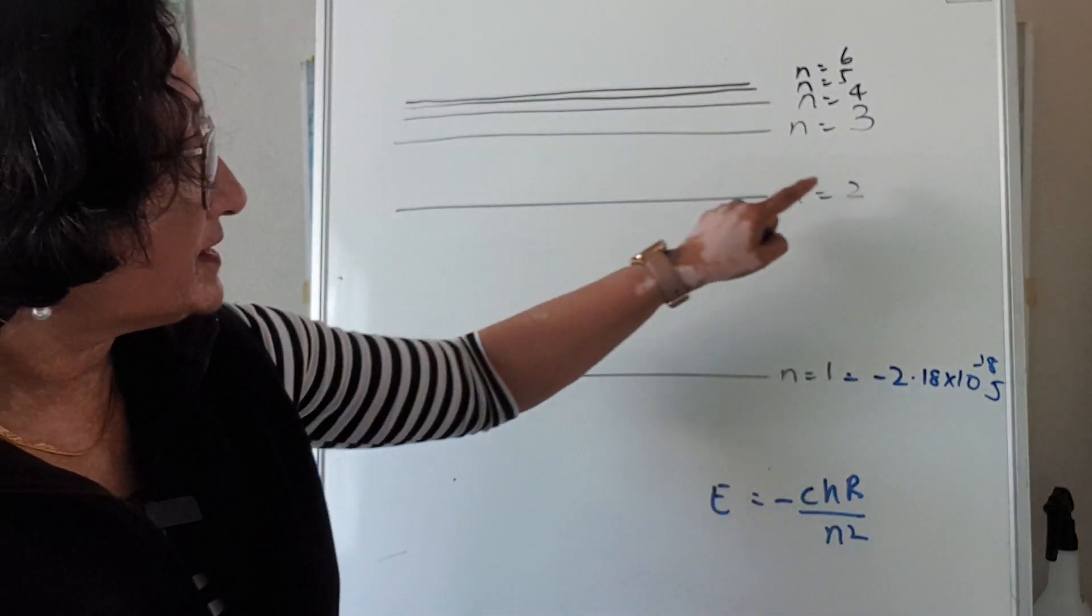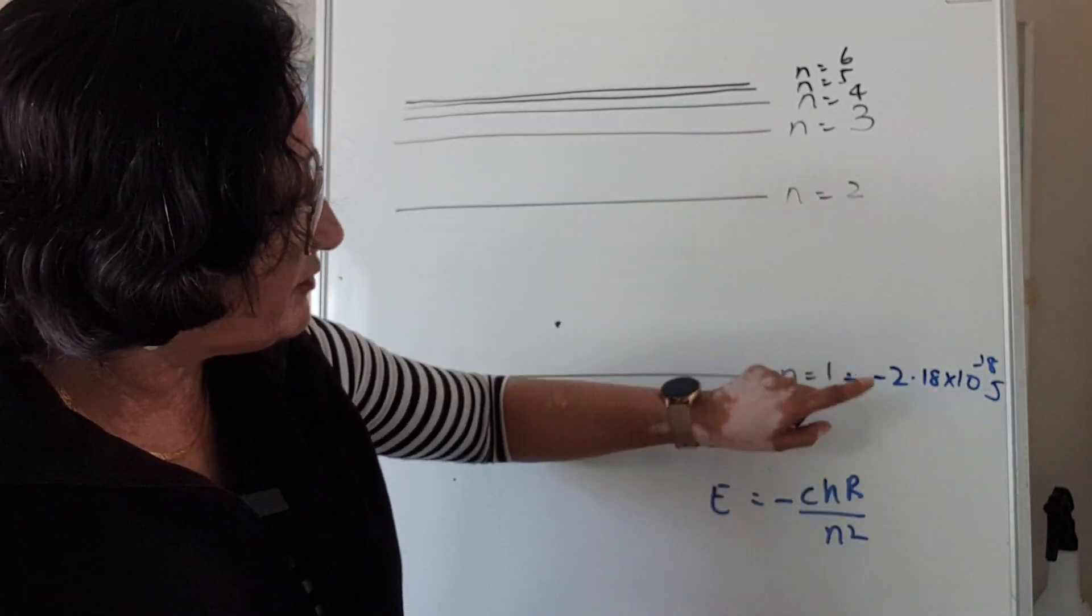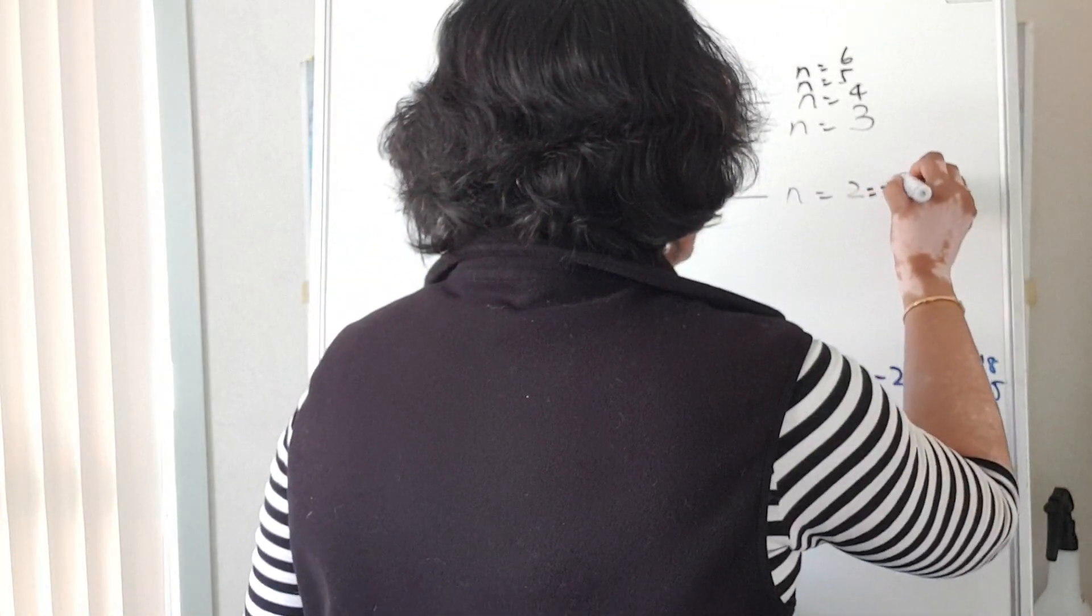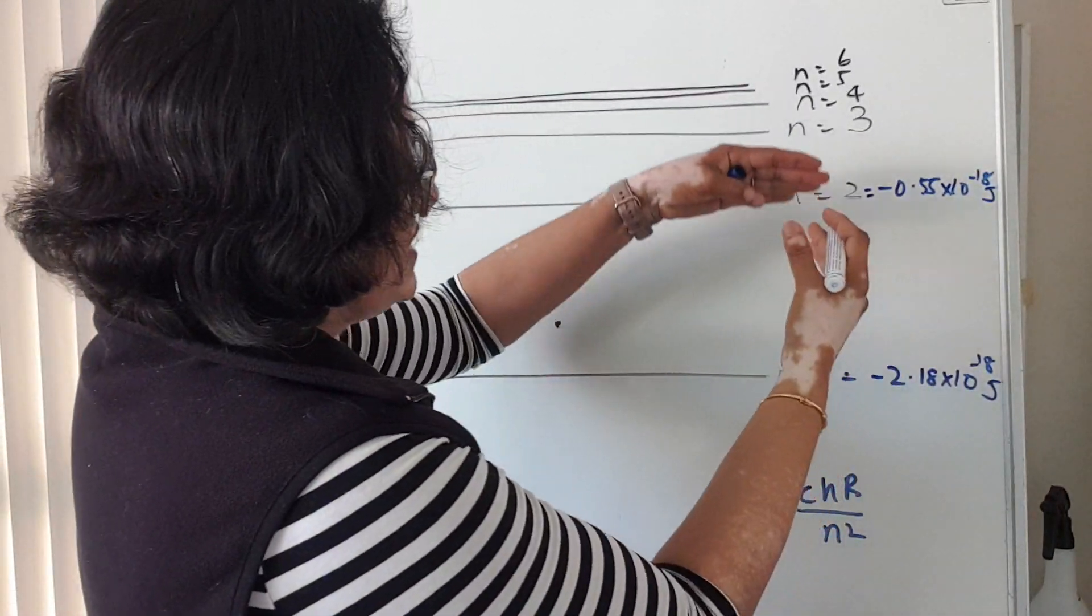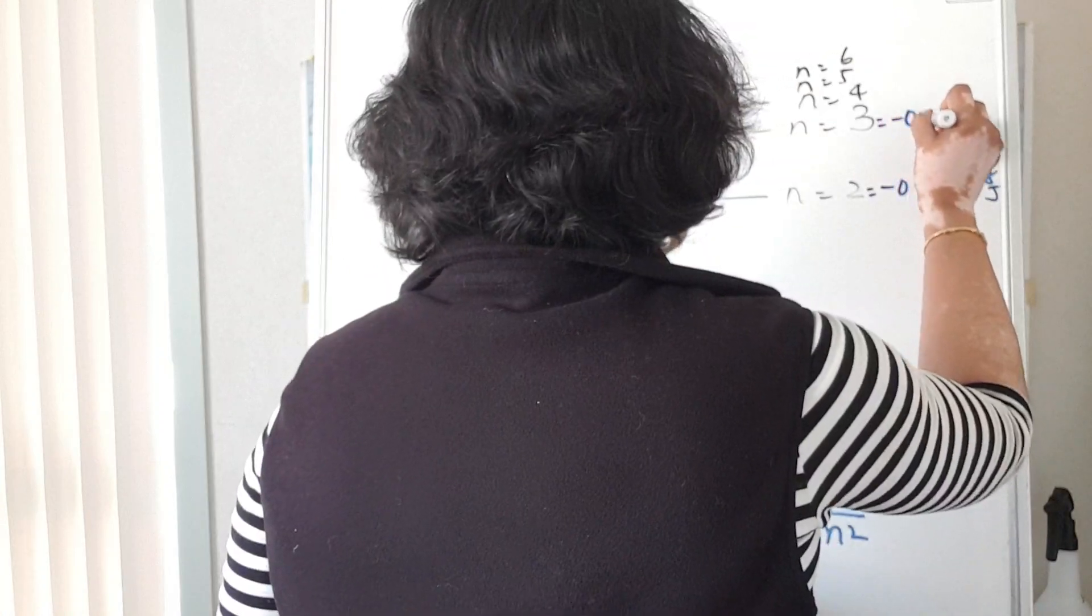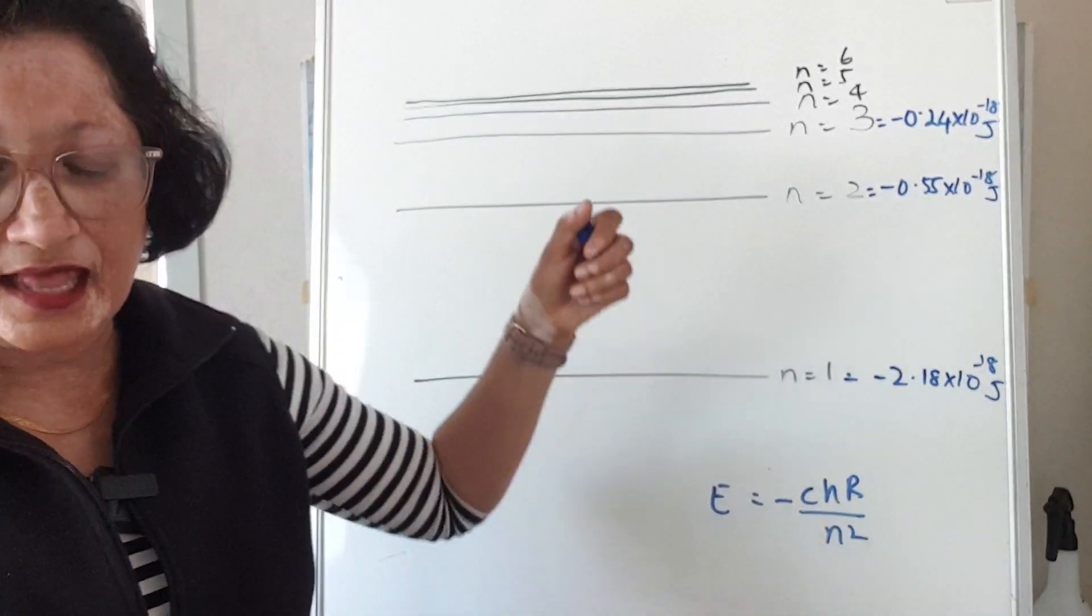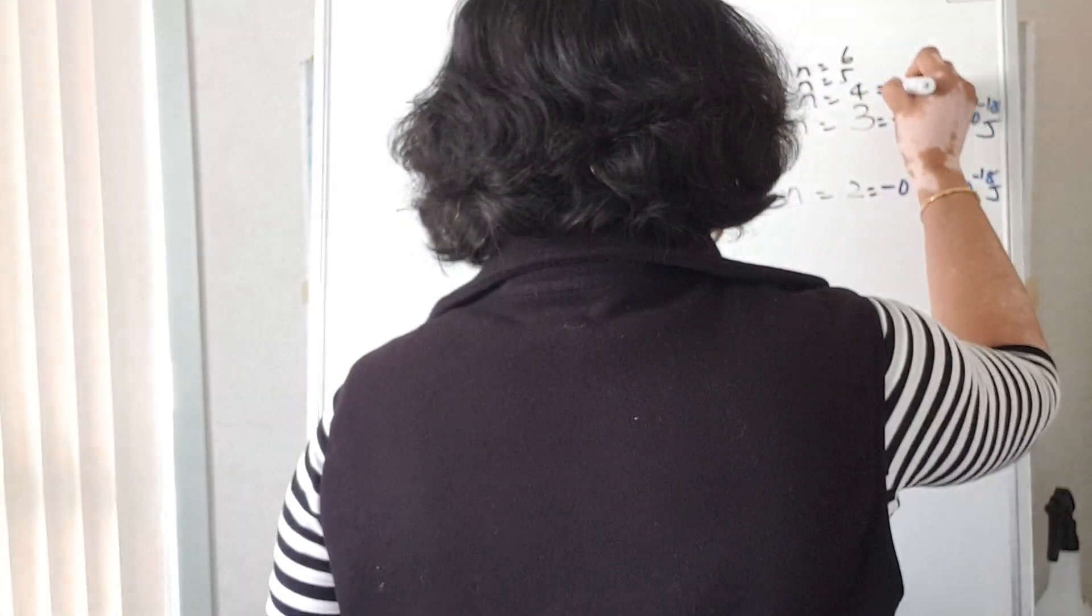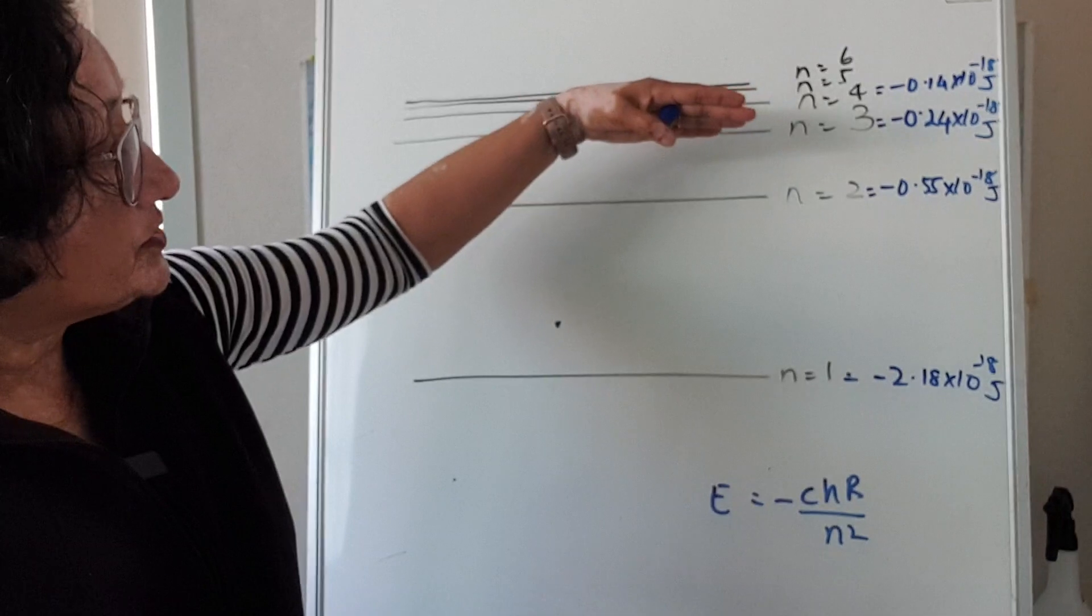Then if you put the same thing, 2.18 times 10 to the power of negative 18 joules and you divide it by 4, why 4? Because 2 squared is 4, and the number that you get is negative 0.55 times 10 to the power of negative 18 joules. You can see these numbers are getting closer and closer to 0. Where n is equal to 3 you get negative 0.24 times 10 to the power of negative 18 joules and so on, and for n equals 4 you get negative 0.14 times 10 to the power of negative 18 joules.